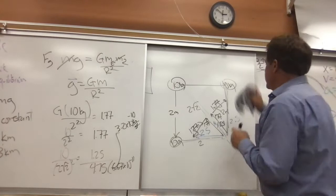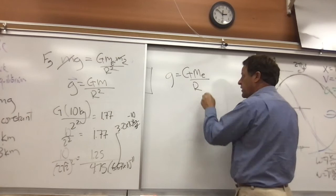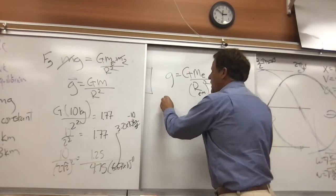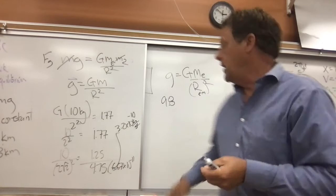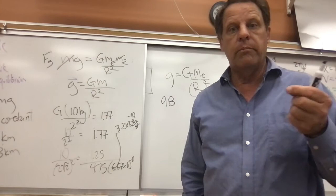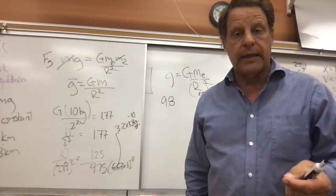You might wonder: if we plug in G, the mass of the Earth, and the distance between the Earth and the Moon, we get g = 9.8. But how do we know the mass of the Earth? And how do we know the distance to the Moon? One way to measure that distance is through the parallax method.